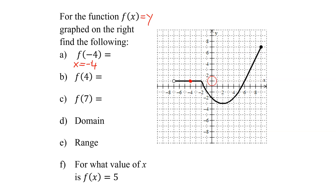And what is its y value? Remember, on this graph we're only labeling in units of 2. So this would be 1, 2, 3, 4, 5, etc. So the y value for this point is 1. So the value of the function at negative 4 is equal to 1.